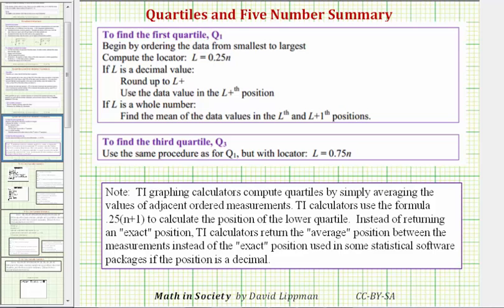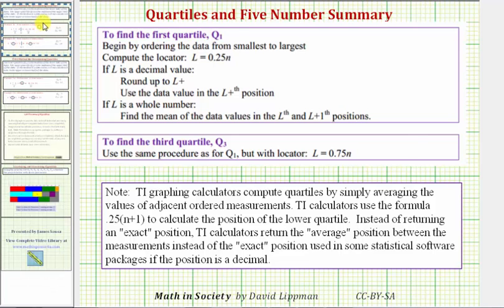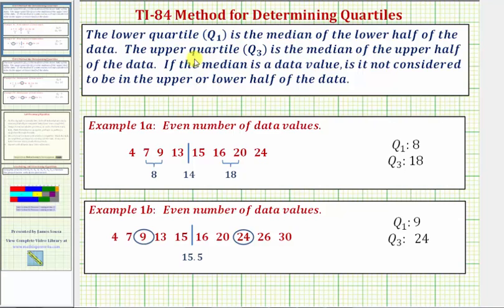Another way to explain how the TI-84 calculator finds the quartiles would be to say that the lower quartile, or Q1, is the median of the lower half of the data, and the upper quartile, or Q3, is the median of the upper half of the data. However, if the median is a data value, it is not considered to be in the upper or lower half of the data.